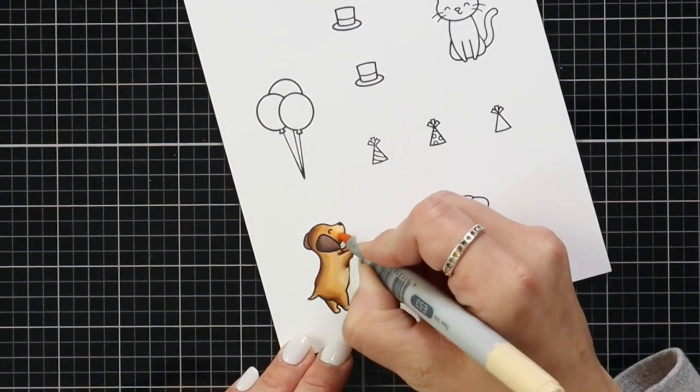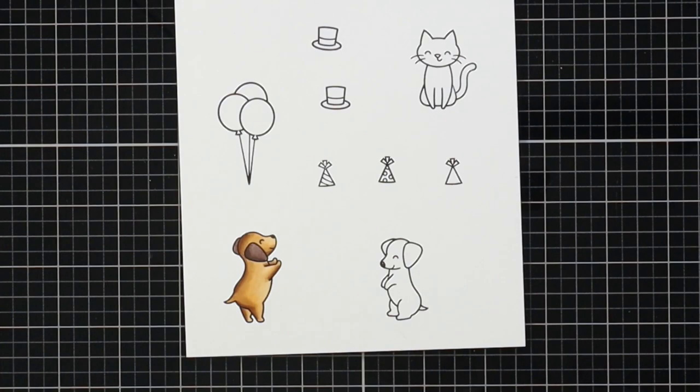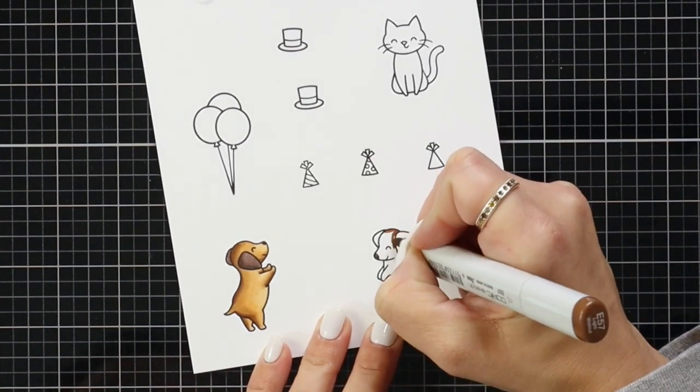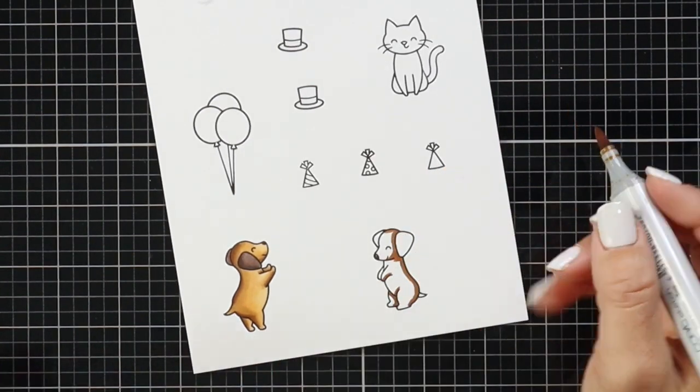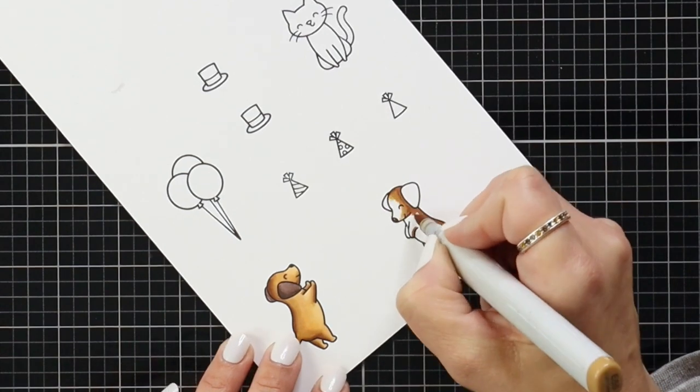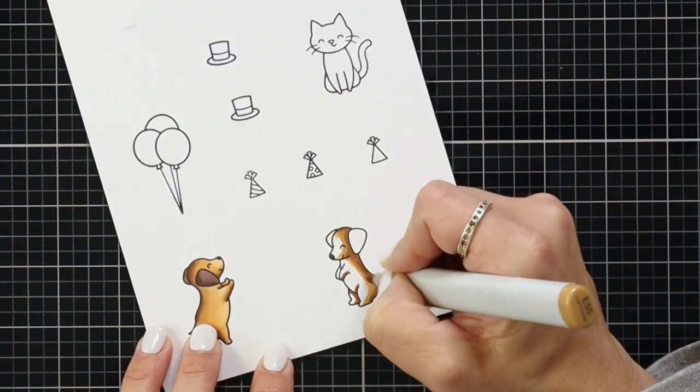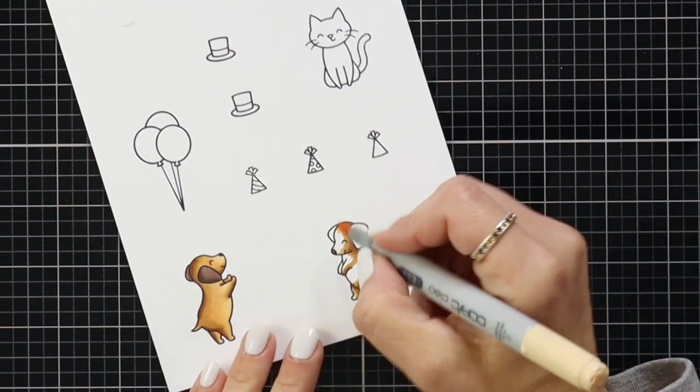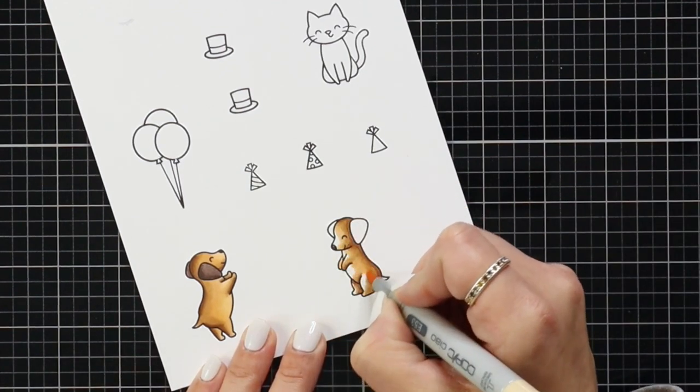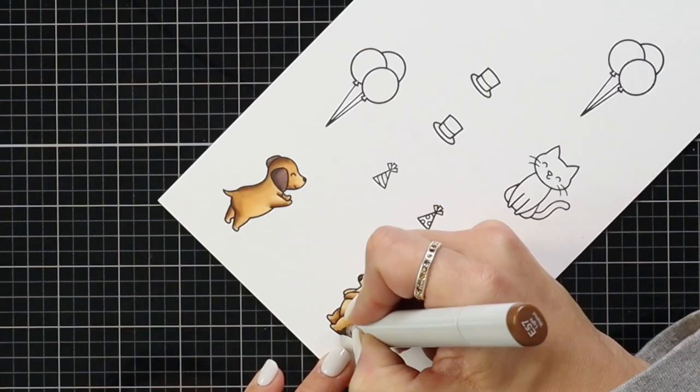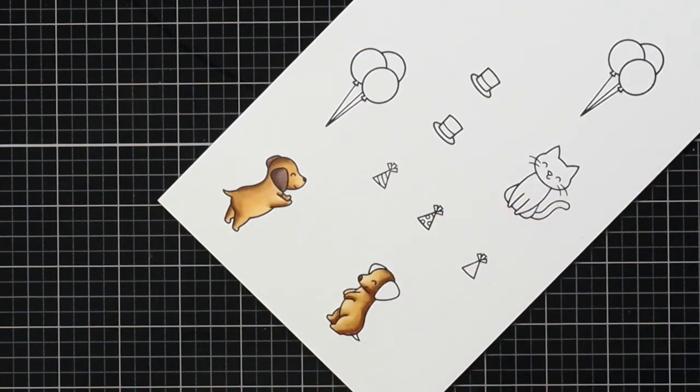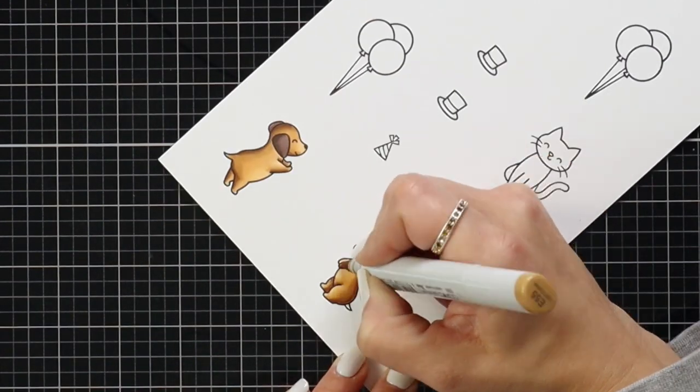For the dogs I use the same colors on each which is E57, 55, 53, and 51. For the ears I did E79, 77, and 74. And I'm going to make my cat gray to kind of just go along with my gray and black theme that I was going to go for the card.